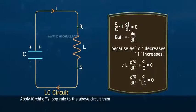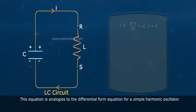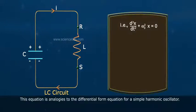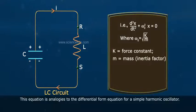This gives d²Q/dT² plus Q/LC equals 0. This equation is analogous to the differential equation for a simple harmonic oscillator: d²X/dT² plus ω₀²X equals 0, where ω₀ equals the square root of K/m — K being the force constant and m the mass (inertia factor).